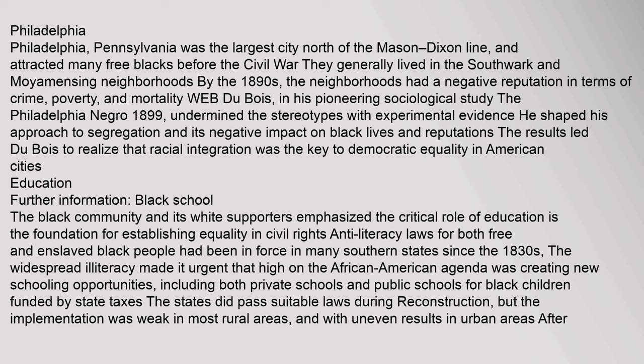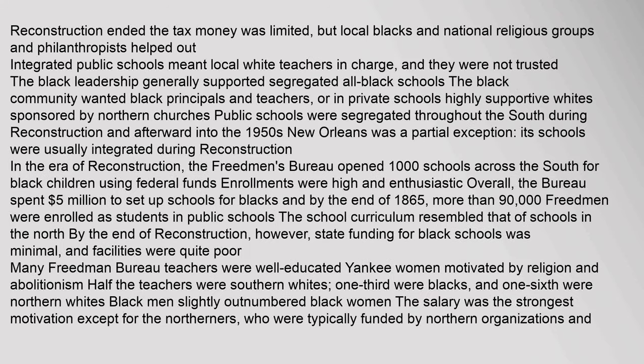The black community and its white supporters emphasized the critical role of education as the foundation for establishing equality in civil rights. Anti-literacy laws for both free and enslaved black people had been in force in many southern states since the 1830s. The widespread illiteracy made it urgent that high on the African-American agenda was creating new schooling opportunities, including both private schools and public schools for black children funded by state taxes. The states did pass suitable laws during Reconstruction, but the implementation was weak in most rural areas.